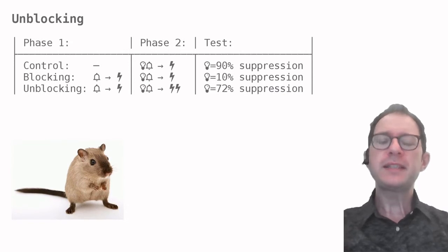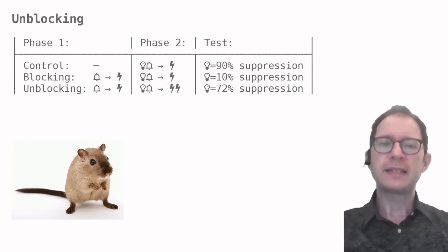In fact, things are even more interesting. Kamin also demonstrated an effect that we now call unblocking. There were three groups of rats in this experiment. The first two groups replicated the blocking experiment exactly, and we see that the results were identical, 90% suppression in the control group and 10% in the blocking group.